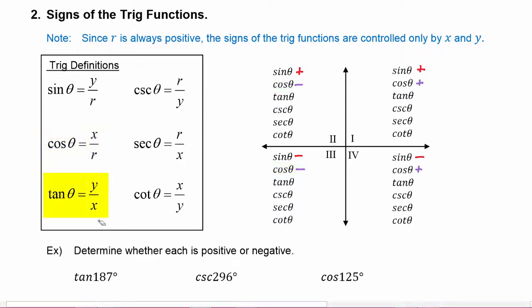Tangent theta is y over x. Here both the numerator and the denominator can be positive or negative. A fraction is positive whenever the numerator and denominator have the same sign, so wherever x and y have the same sign, tangent will be positive. In quadrant one, x and y are both positive, and in quadrant three, x and y are both negative, so tangent is positive in both. Tangent will be negative when x and y have different signs, which happens in quadrants two and four.